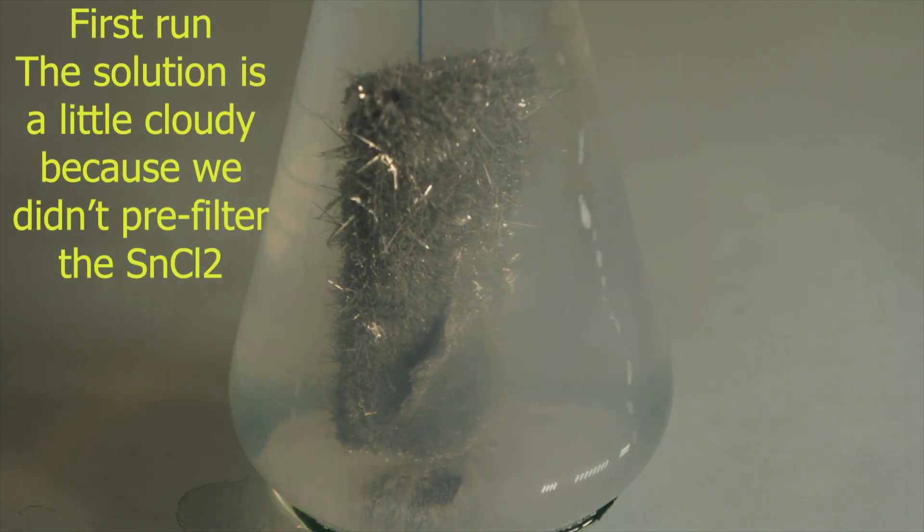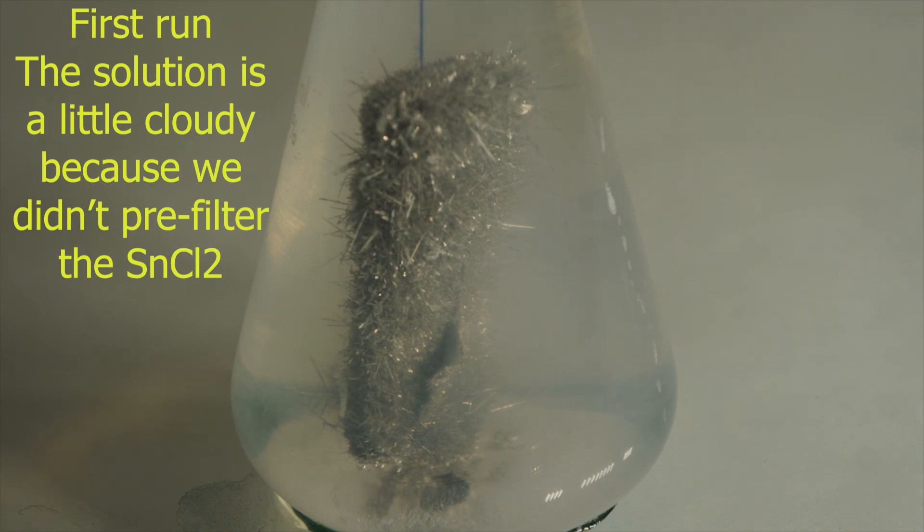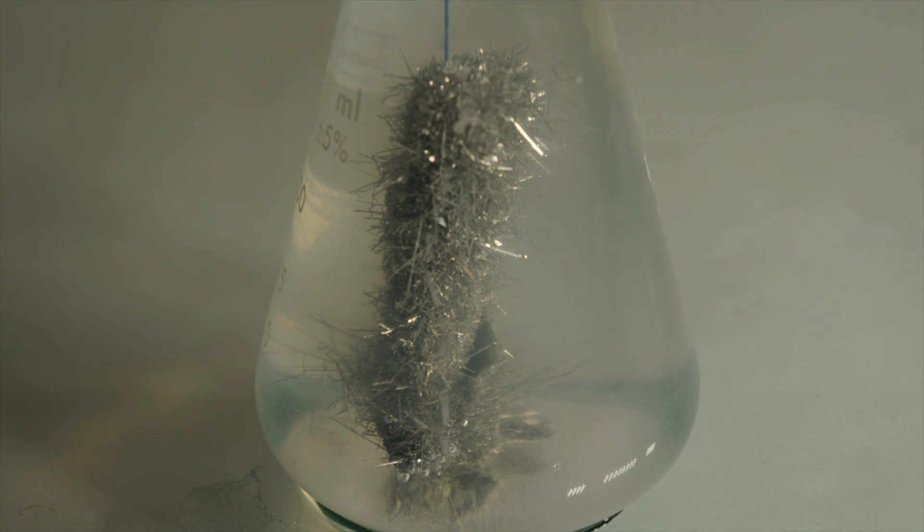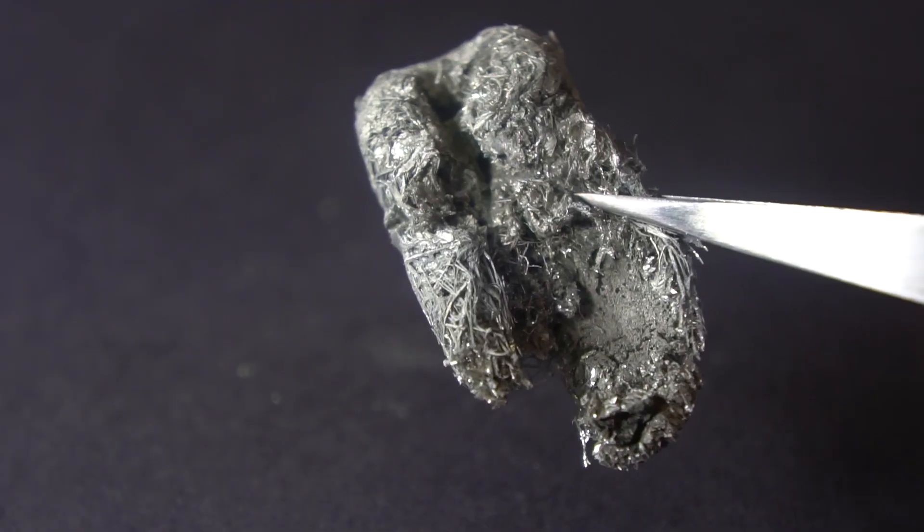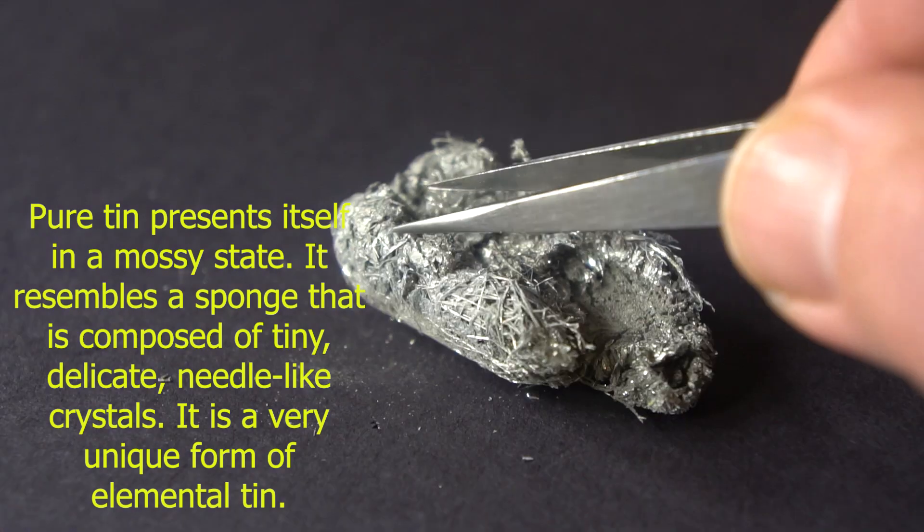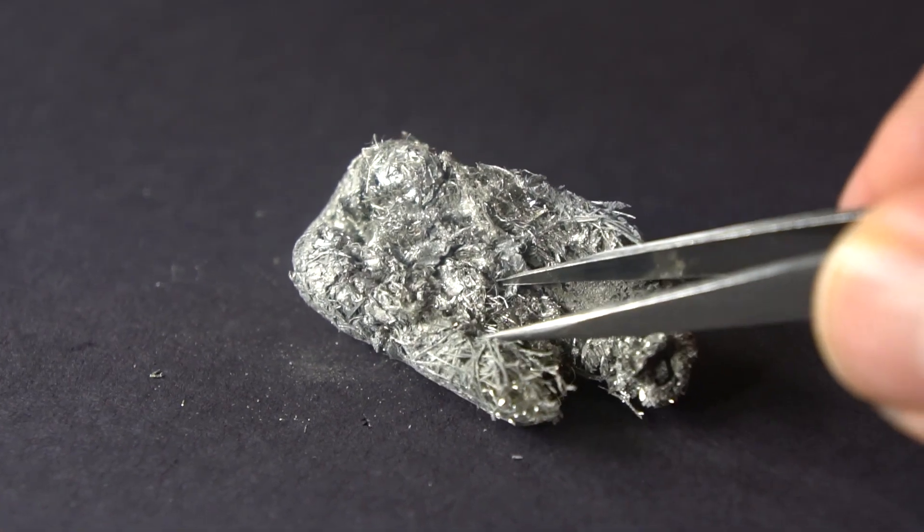The first time we ran the experiment, after 24 hours the zinc was gone and the tin floated to the surface and coalesced into a mossy state. We call this tin mossy tin. We were able to drain the solution and pull the pure tin out of the flask.